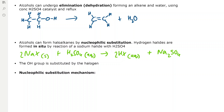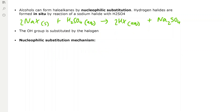The sodium halide reacts with sulfuric acid to form the hydrogen halide and sodium sulfate. The alcohol group is then substituted by the halogen nucleophile.